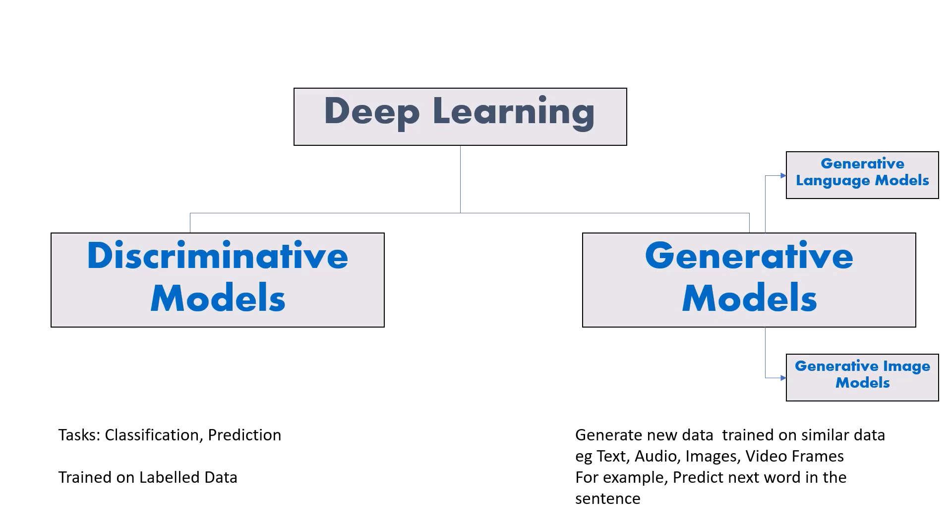In generative models we have generative language models and generative image models. ChatGPT is part of generative language models. In generative models we do not do classification or prediction — instead, we generate some new data, either in the form of text, audio, images, or video frames.